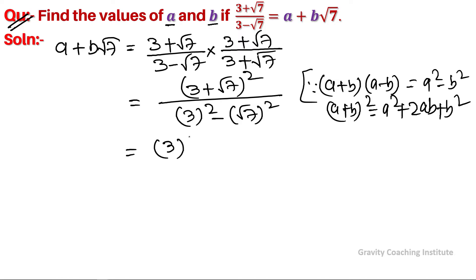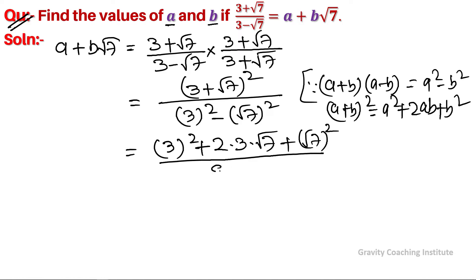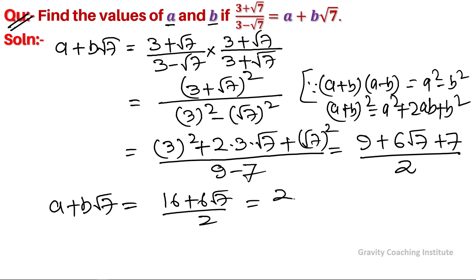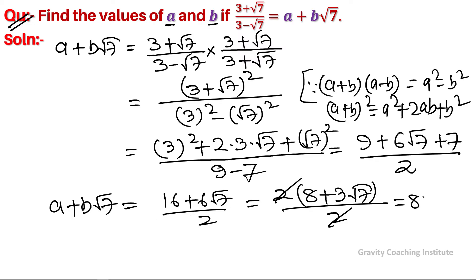So the numerator becomes 3² + 2×3×√7 + (√7)² upon 9 - 7, which equals 9 + 6√7 + 7 upon 2. That gives 16 + 6√7 upon 2. Taking 2 common in the numerator, we get 2(8 + 3√7) upon 2, and the 2s cancel, so we get 8 + 3√7.